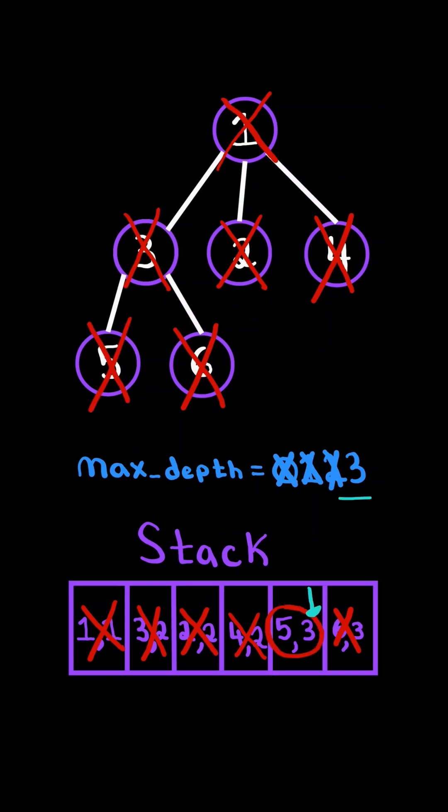We pop from the stack, and notice its depth is the same as max depth, so we don't update. Node 5 does not have any children, so we don't append to the stack.